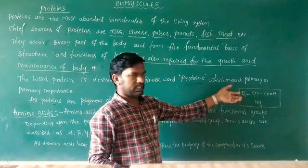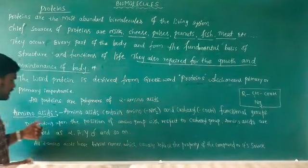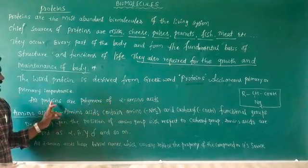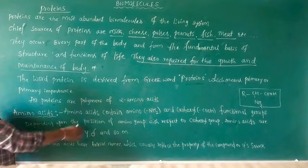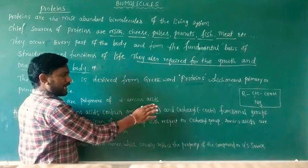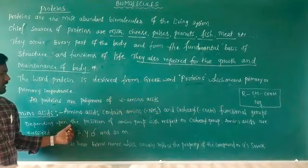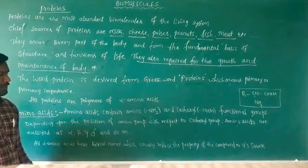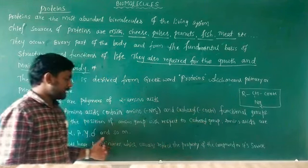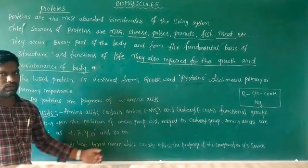R may be hydrogen, cyclic, or aromatic. The definition for amino acids: amino acids contain one amino group (NH2) as a functional group and one carboxyl group (COOH). Depending upon the position of the amino group with respect to the carboxyl group, amino acids are classified as alpha, beta, gamma, delta, and so on.